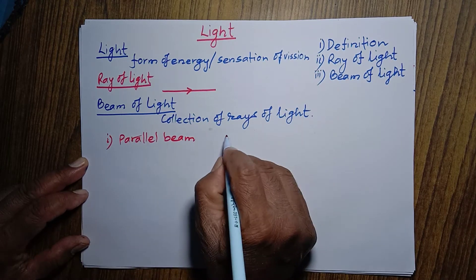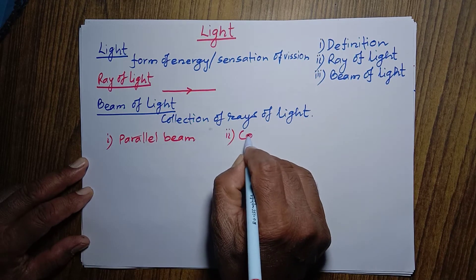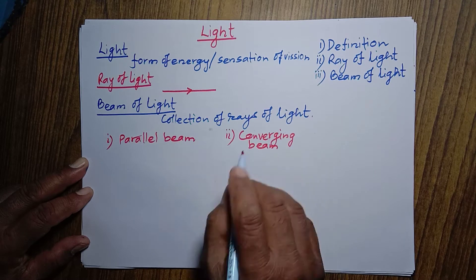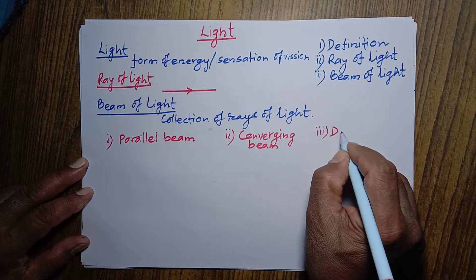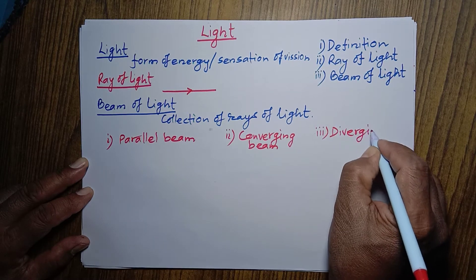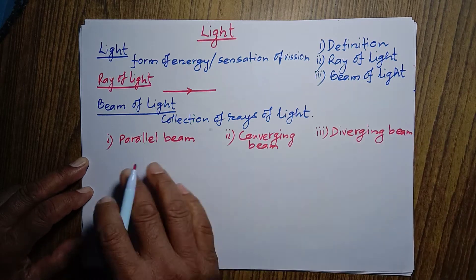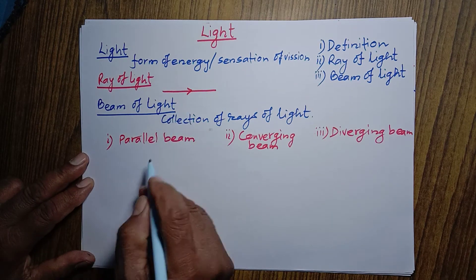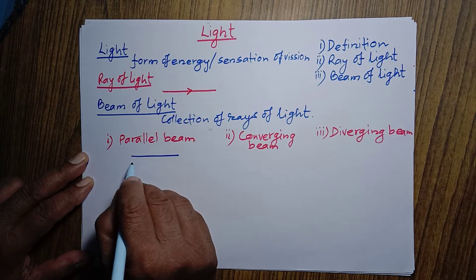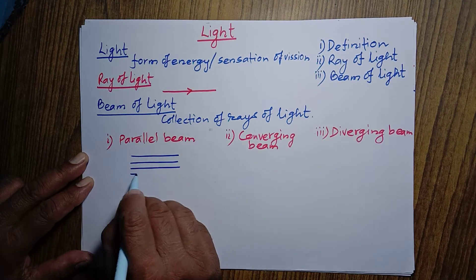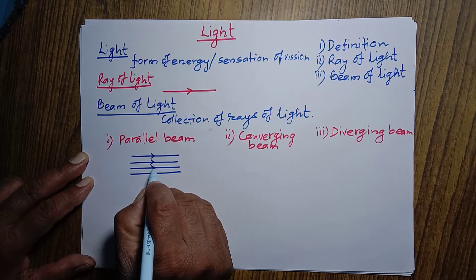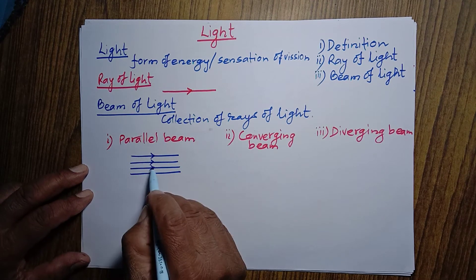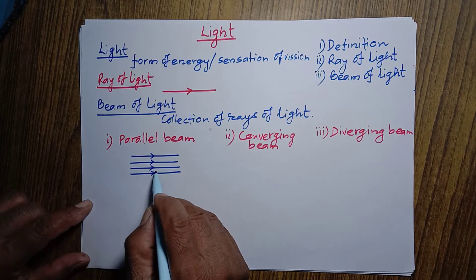The second type is converging beam of light, and the third is diverging beam of light. For parallel beam of light, the collection of rays is where all rays are parallel with each other and moving in the same direction. This can be represented as the light coming from a torch light.